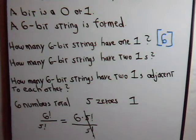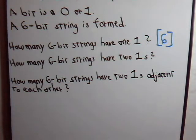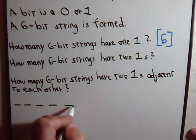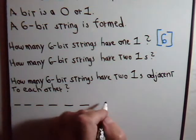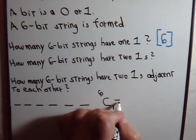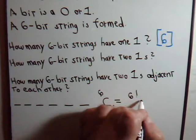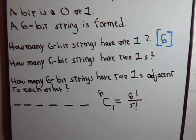Let's also approach this problem as a combination problem. We have six positions, and we ask: in how many ways can we select from six positions to accommodate our single numeral one? That gives us C(6,1), which equals six factorial divided by five factorial times one factorial, and again we get the same answer: six.